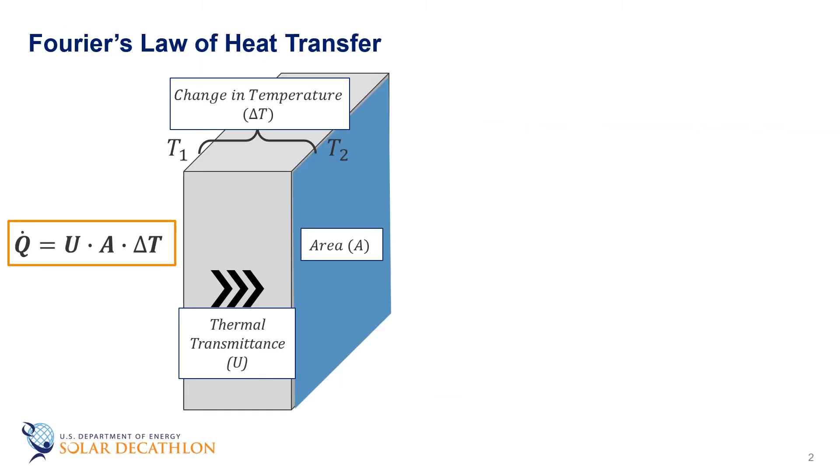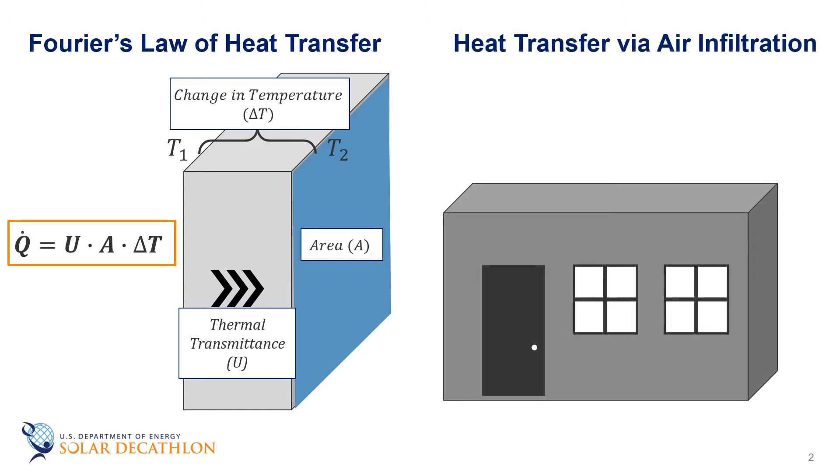In this module, we've discussed how thermal energy moves through the building envelope by looking at Fourier's law of heat transfer. But we also need to realize that air moves in and out of the envelope as well. This can occur through cracks around doors or windows and often occurs in joints of materials, especially where you have dissimilar products together. Another common area for leaks is around electrical and plumbing penetrations.